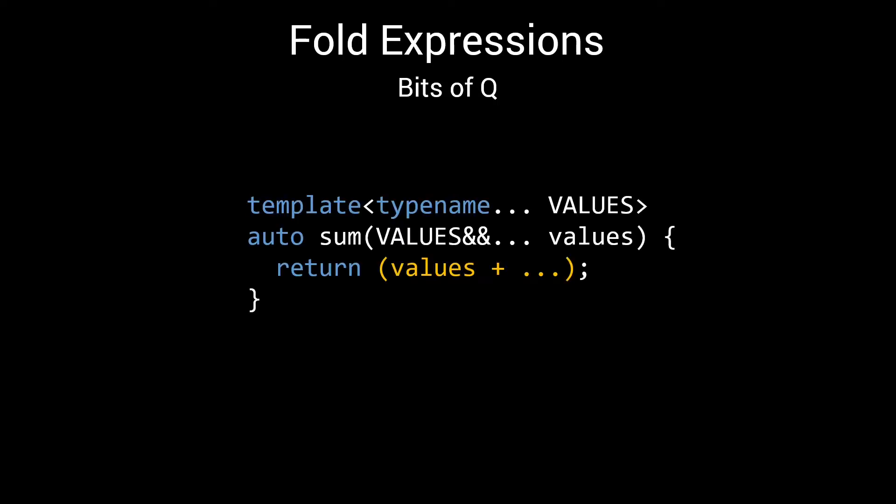C++17 introduced fold expressions. A fold expression is an instruction for the compiler to repeat the application of an operator over a parameter pack. For example, on the screen you see a SUM function that has been implemented as a fold.